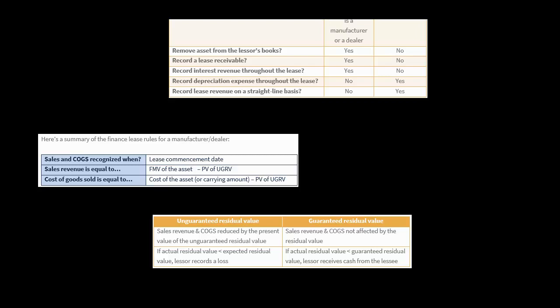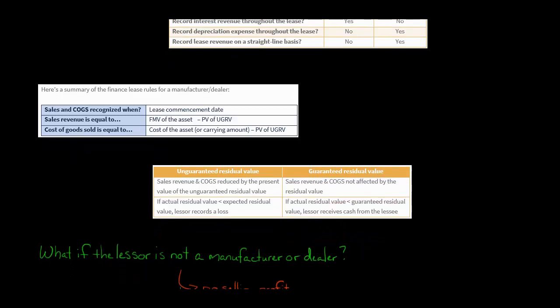Now, if it turns out at the end of the lease that the actual residual value is lower than what the lessor expected, and there was no guarantee made by the lessee, then the lessor would book a loss. But if the residual value had been guaranteed by the lessee, and it turns out the asset is only worth $10,000 instead of $18,000, then because the residual value was guaranteed, the lessee would need to make the lessor whole, and the lessor would receive cash from the lessee.